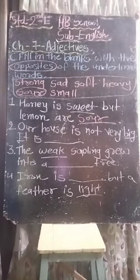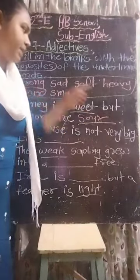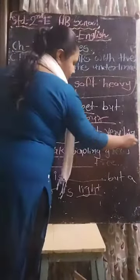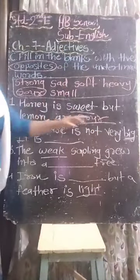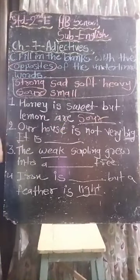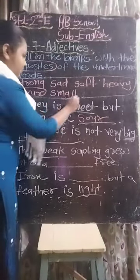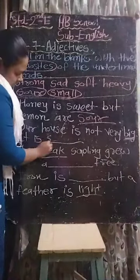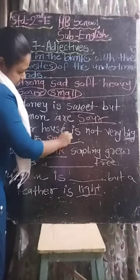Second one: our house is not very big. The underlined word is big. Our house is not very big — it is small. The answer is small. Write down here: small.